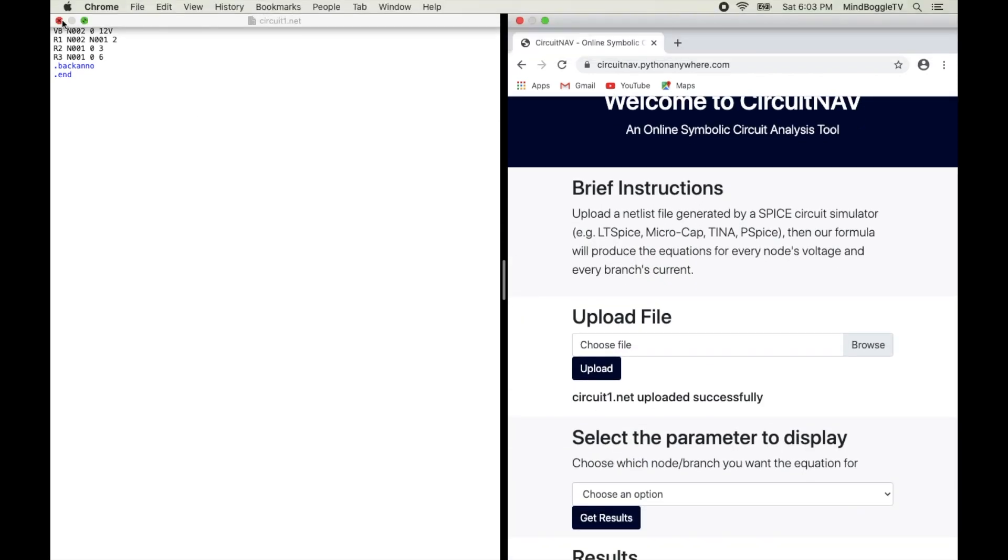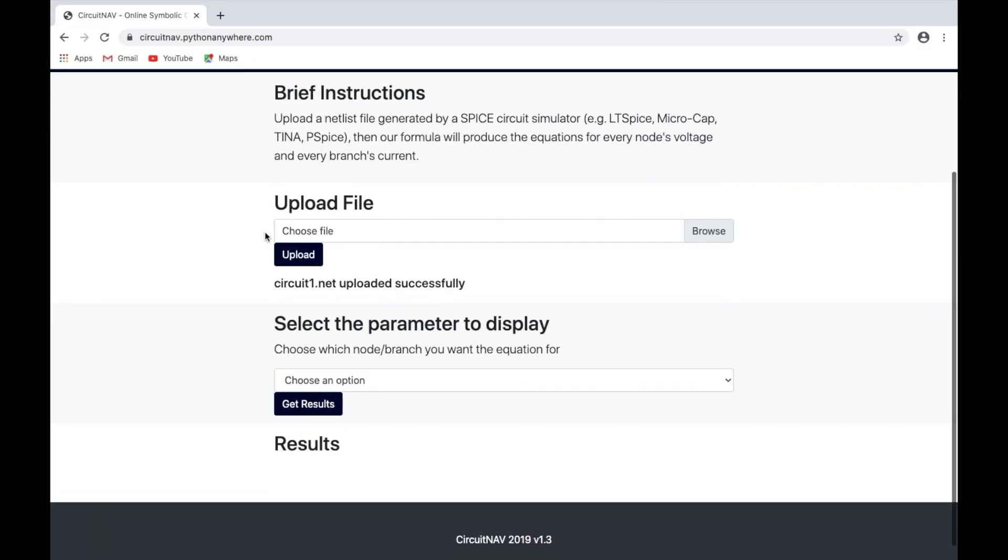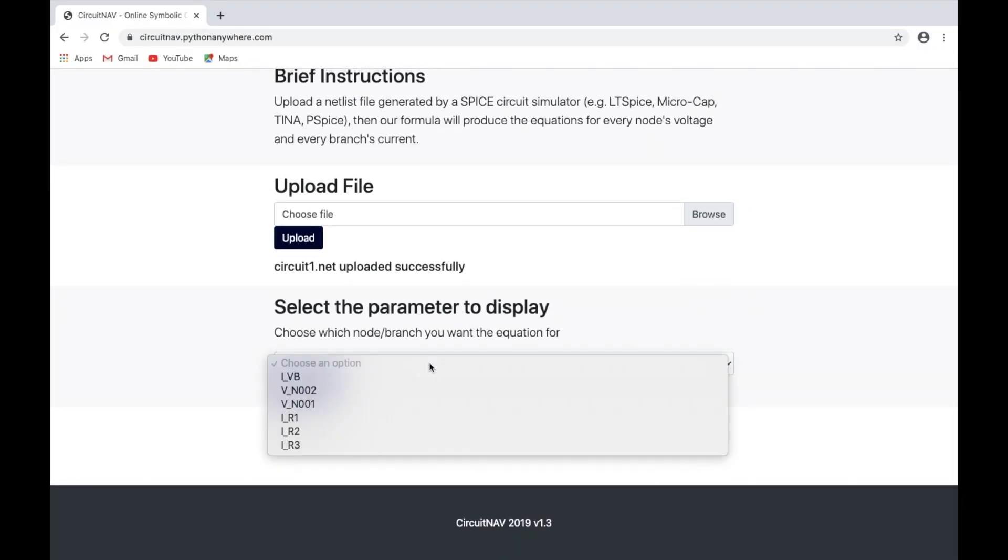It says it was uploaded successfully. It's going to give us an option of choosing which parameter to display. Let's select the current at R1, and then we can compare the results with the answers that we previously came up with.